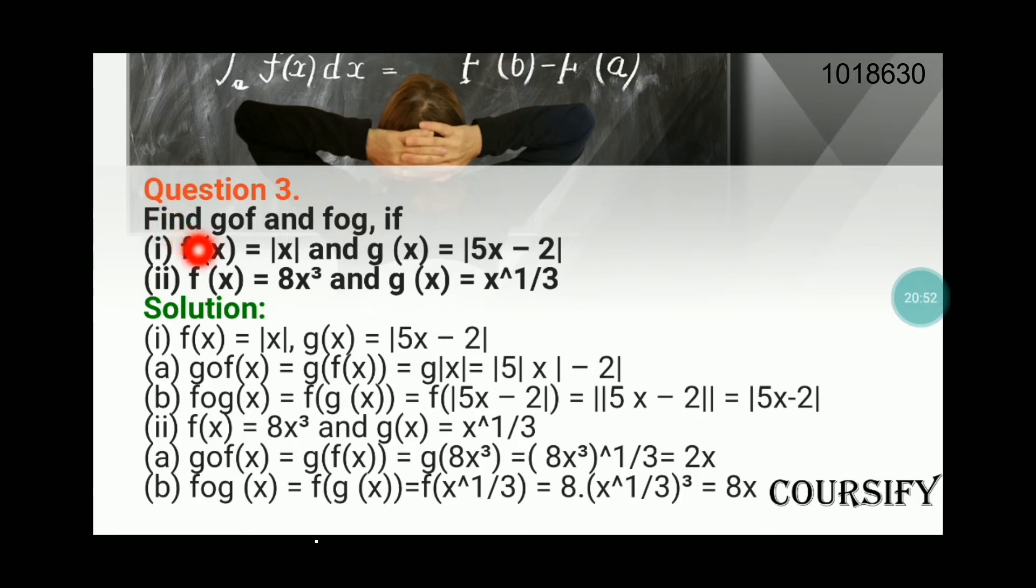We have to find g of f and f of g. The first is f(x) = |x| and g(x) = |5x - 2|. So now for g(f(x)), we first find f(x) which is |x|. Now we feed this |x| to g. What does g do? It will replace x with |x|.